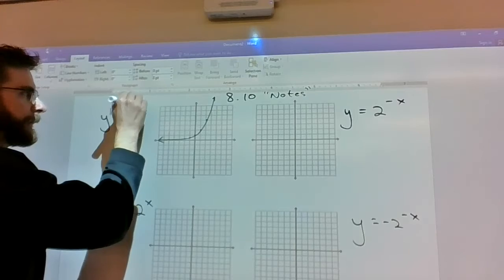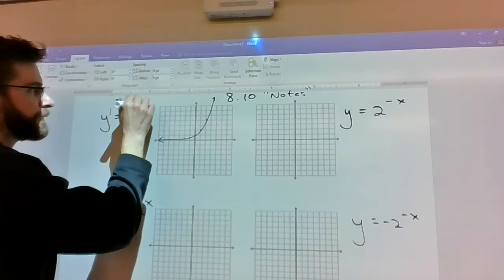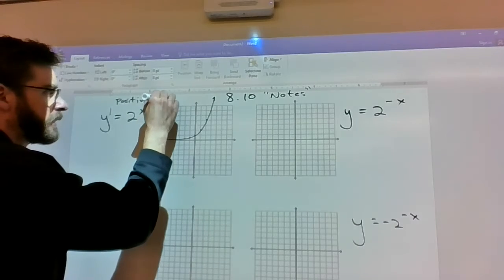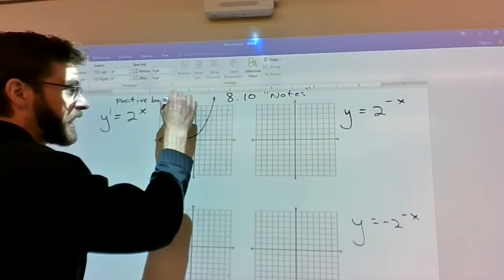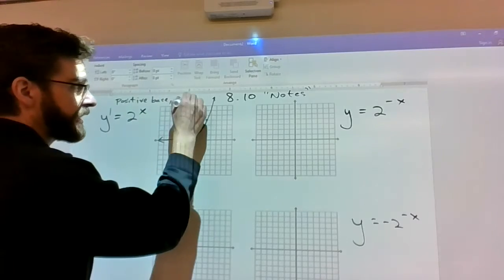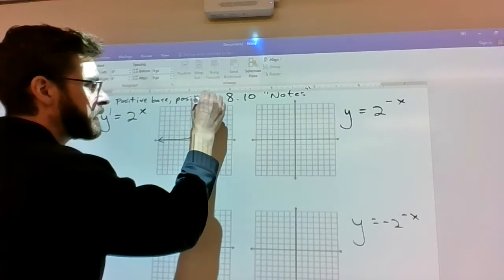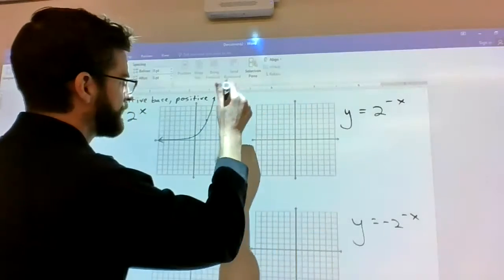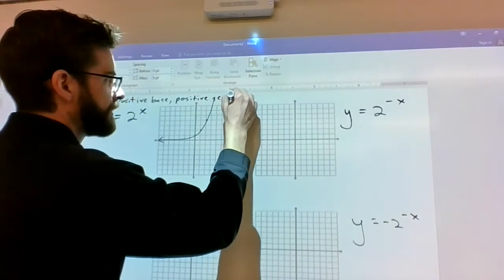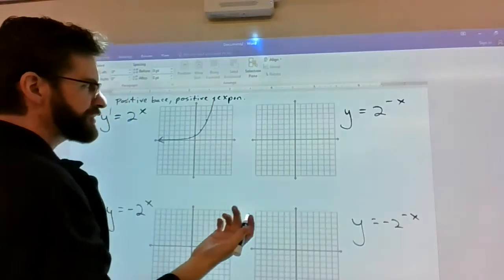So positive base, that's the 2, positive exponent, which is the x there. I'm going to get rid of this, I really don't need that. Positive exponent, we'd call this a regular case.